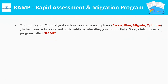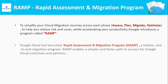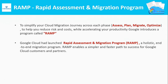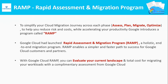To simplify your cloud migration journey across each of the four phases and to help reduce migration risk and costs, Google introduces a program called RAMP. RAMP stands for Rapid Assessment and Migration Program and it's a holistic end-to-end migration program that helps Google Cloud customers to enable a simpler and faster path for migration. With RAMP, you can evaluate your current landscape and total cost for migration with a complimentary assessment — and yes, the assessment is free from Google.